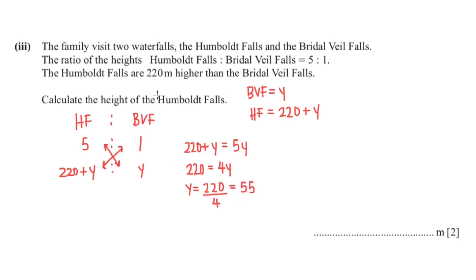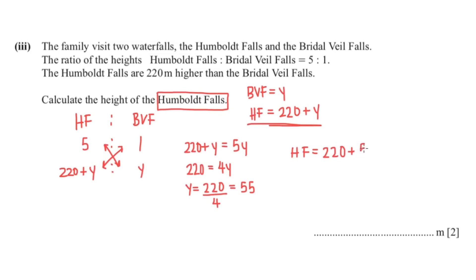Now we calculate the height of the Humboldt Falls: 220 plus 55, which is 275. So the height of the Humboldt Falls is 275 meters.